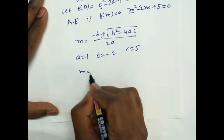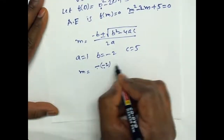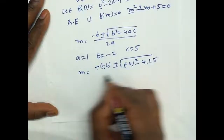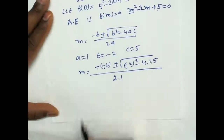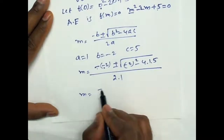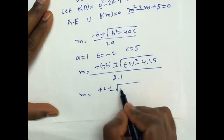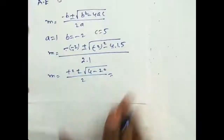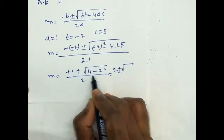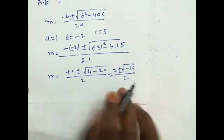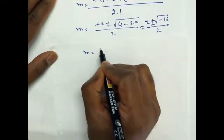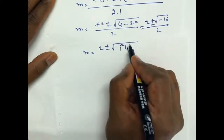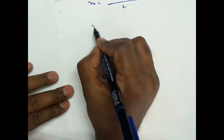Applying the quadratic formula: m equals minus b plus or minus square root of b squared minus 4ac, all divided by 2a. Here a equals 1, b equals minus 2, c equals 5. So m equals 2 plus or minus square root of 4 minus 20, divided by 2, which gives 2 plus or minus square root of minus 16, divided by 2.